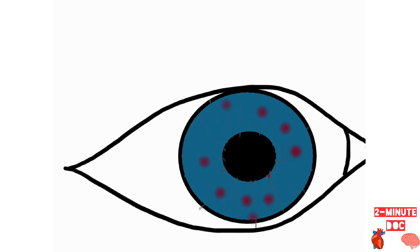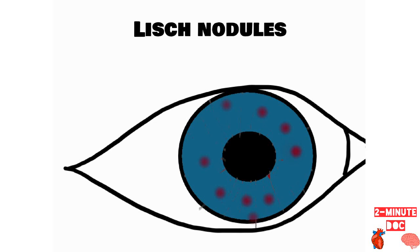If you look at his eyes, you can see some pigmented lesions on his iris. These pigmented lesions in the iris are called Lisch nodules. These are some of the features specifically seen in neurofibromatosis.